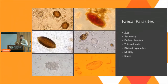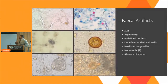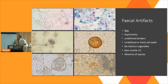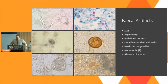Let's have a look at some non-parasites. Top left, there's a bit of plant hair. Why is that not a parasite? It looks like a worm — it's sort of wormy-shaped. Well, if we measured it, it would probably be the wrong size — quite large, actually. It's sort of symmetrical and it's got defined borders, but it hasn't got any distinct organelles. When you see a larva, there will be a gut, an oesophagus, often a buccal cavity. So you look at that and you go — that's a plant hair.